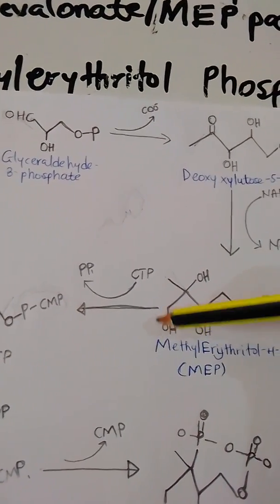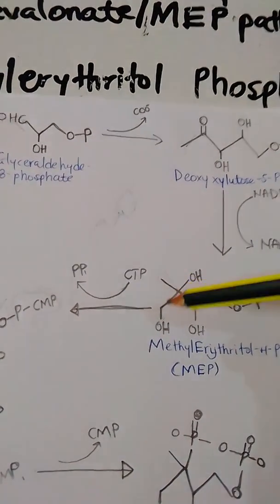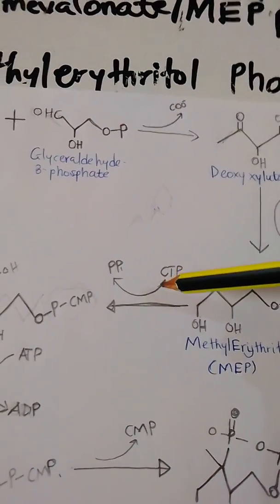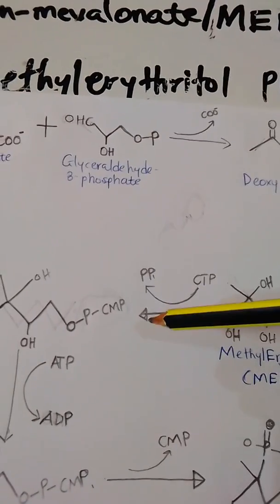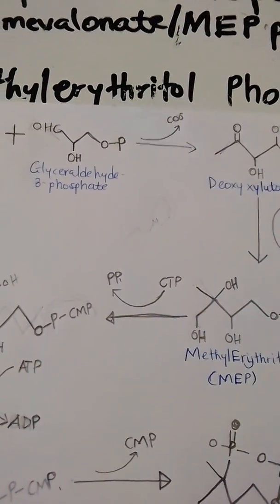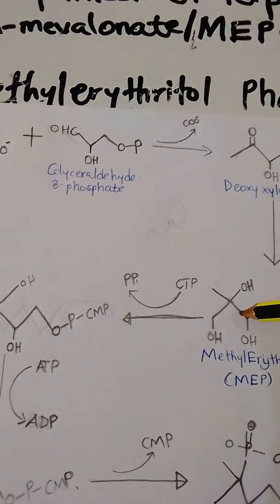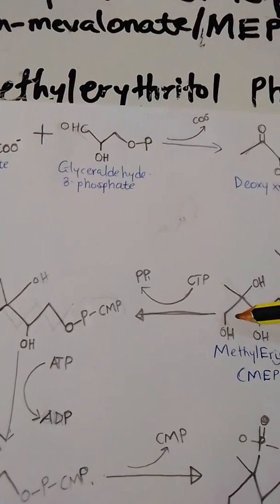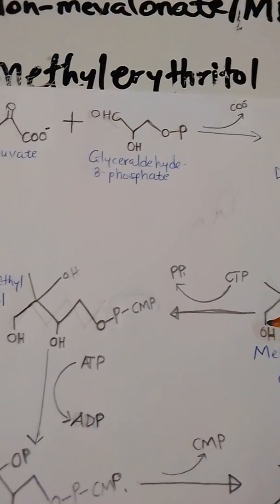At the end you get a nucleoside monophosphate — CMP. That CMP reacts at the terminal phosphate group to improve the reactivity of the MEP for the next reaction.